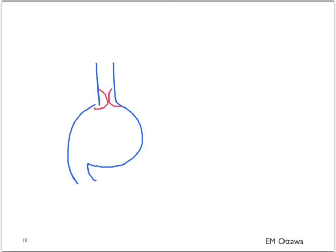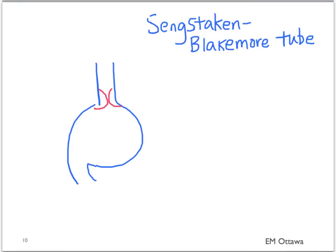If none of these work, the last resort for bleeding varices is a Blakemore tube. It is a tube inserted like a nasogastric tube, and its main function is a balloon that tamponades the esophageal varices.